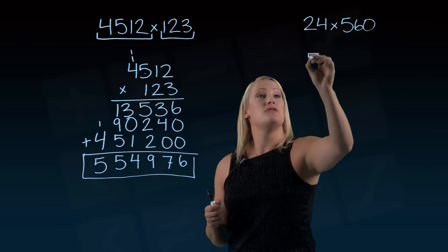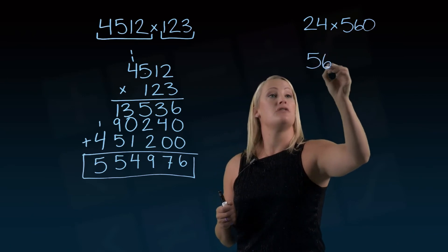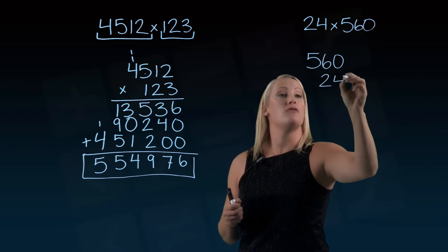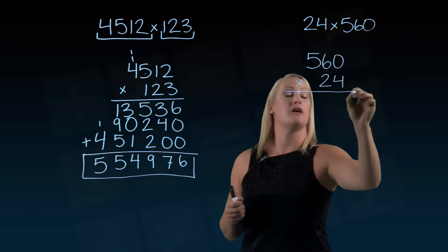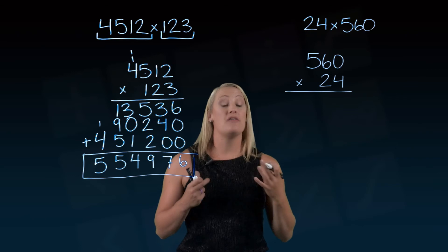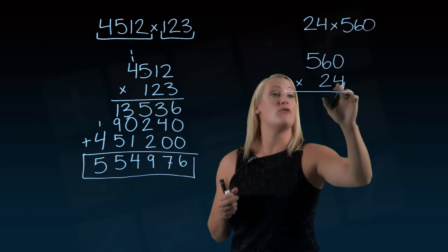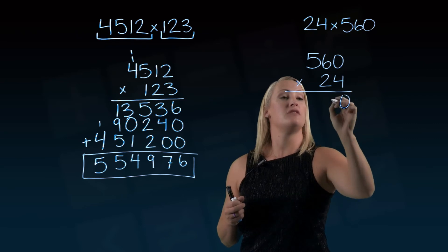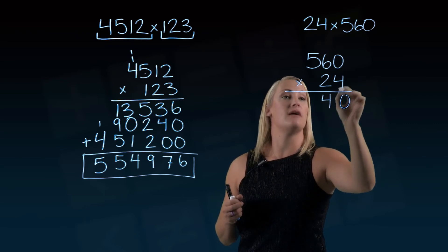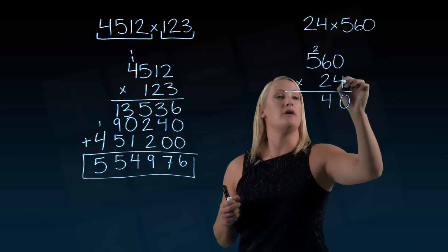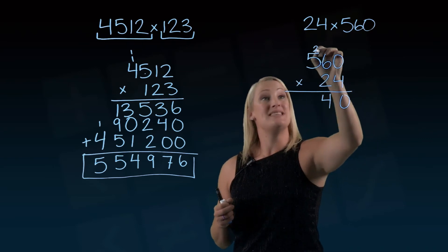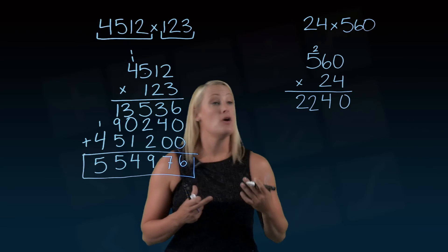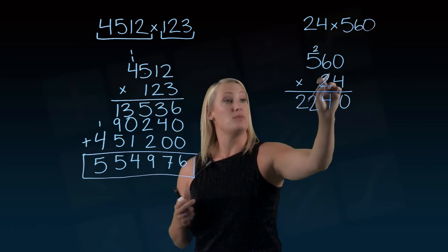I've got the larger of the two numbers on the top, so in this case it's 560, and the smaller on the bottom, 24. Let's multiply 560 first by 4. 4 times 0 is 0. 4 times 6 is 24, so I'll put the 4 down there and the 2 up here. 4 times 5 is 20 plus that 2 is 22.